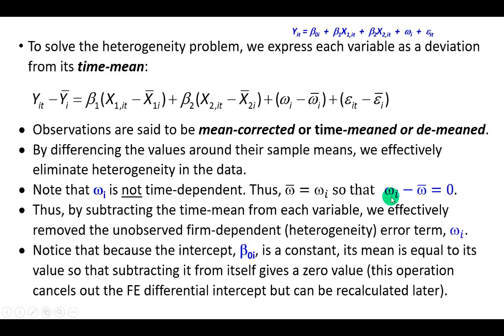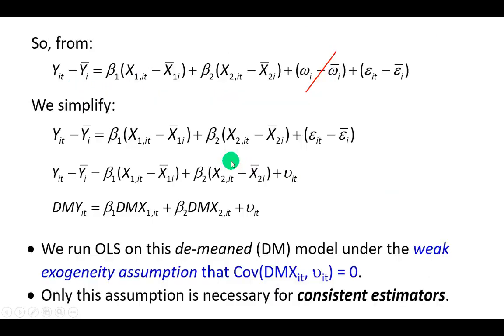So as you can see, by subtracting the time mean from each variable, we effectively removed the heterogeneity term. And with the heterogeneity term out of the picture, we're now able to run OLS on the demeaned model under the assumption of weak heterogeneity.